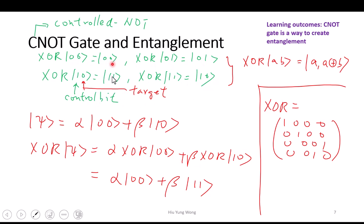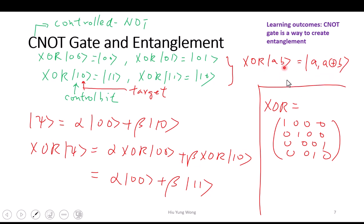So 00 stays 00, and 01 stays 01, because the control qubit is zero. But when the control bit is one: 10 becomes 11, and 11 becomes 10. We can write it as: the first qubit is unchanged, and the second qubit becomes the exclusive-OR between A and B. That's why it's called the exclusive-OR gate.